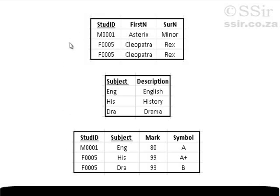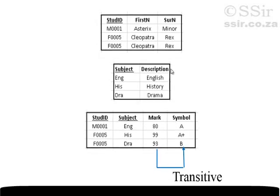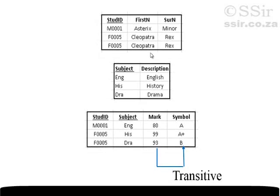We achieved this by firstly putting it into first normal form and then removing partial dependencies to get to second normal form. However, you'll remember that symbol and mark still have a transitive dependency, and in order to get to third normal form I need to remove transitive dependencies.